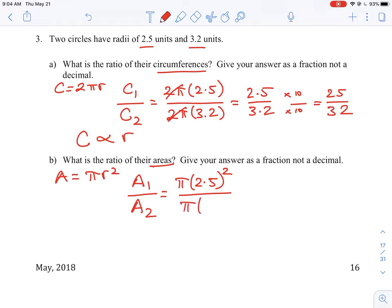And then area 2, similarly, is going to be 3.2 and we're also going to square that. So again, the pis cancel, so they actually don't enter into our ratio.